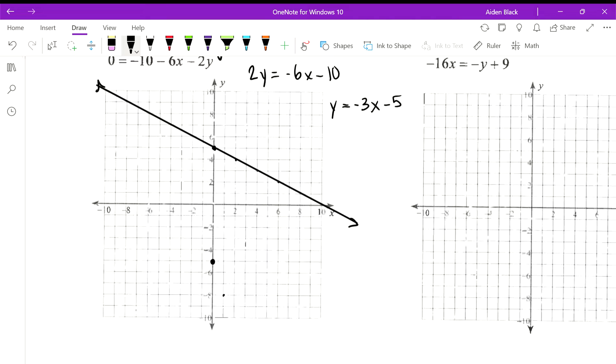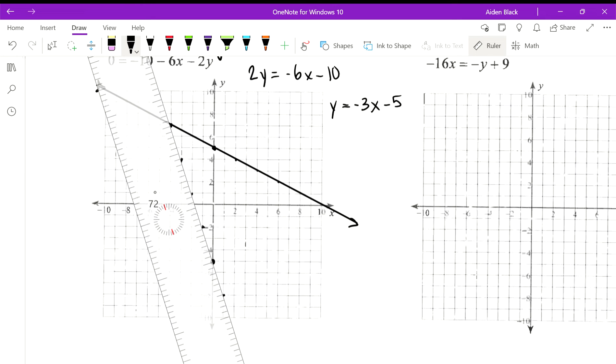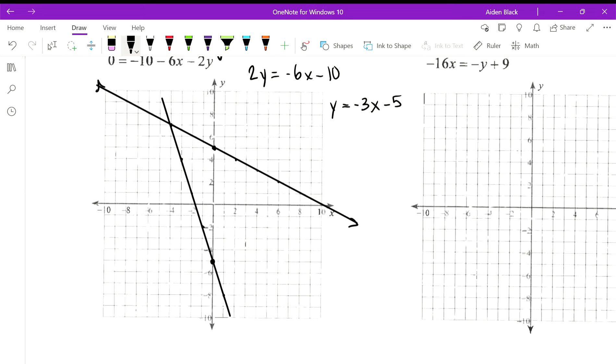So let's go to our y-intercept of negative 5, and we will go down 3 over 1. If I need to see where the graph goes to the left, I'll go to the left 1 and up 3. There's my intersection.